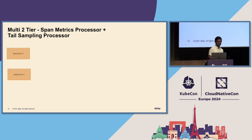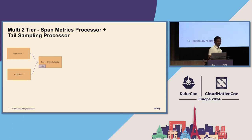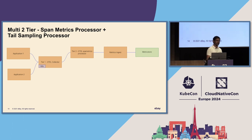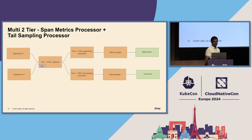Finally, we also tried another configuration where we moved the span metrics processor into its own tier. On the first tier we just have Kubernetes enrichment. On the second tier, there's a dedicated path for metrics from the span metrics processor, a dedicated path for tail sampling for the traces, and the raw traces get written into the trace store as well.